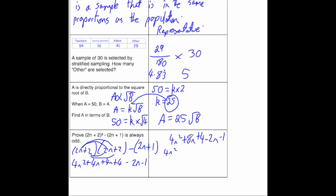So it's 4n². The 8n take away the 2n, well that's going to be 6n. And the 4 take away the 1, well that's going to be plus 3.